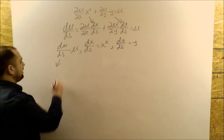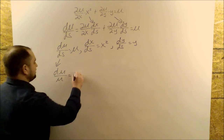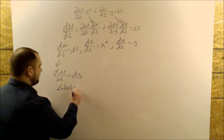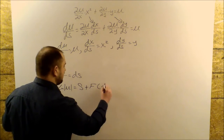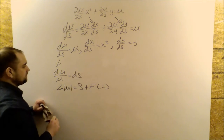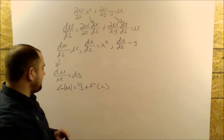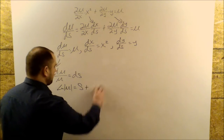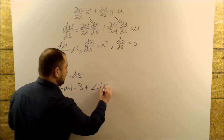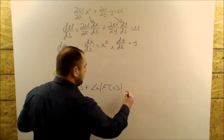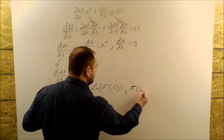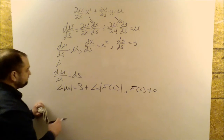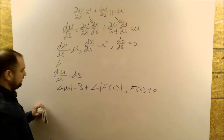Rearranging, I get du/u = ds. This is the same as saying that ln|u| = s plus some function that is constant with respect to s. I'm going to rewrite it in the form of a natural log of some function, and so we have to give the condition that f(c) does not equal 0 — you can't take the natural log of 0. The reason for doing this will become apparent in a few steps.